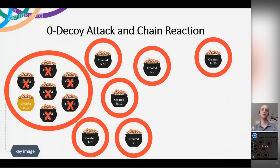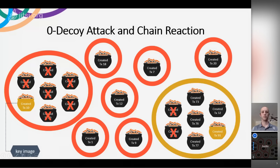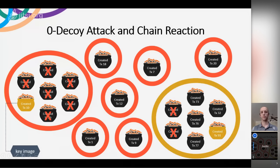This is really the basics of a zero decoy attack or zero decoy form of analysis, where you look at transactions where there is only one possible actual output spend, and you compare it to other transactions to learn information, to narrow down information. And then from there, since this output is known to be spent, then any other transactions that could include that output can also be eliminated — shown in the second ring signature on the right — where you sort of have this propagating effect. This propagating effect is called the chain reaction. This diagram really helps summarize the idea of zero decoy attacks and the resounding chain of reaction that results from these zero decoy transactions.